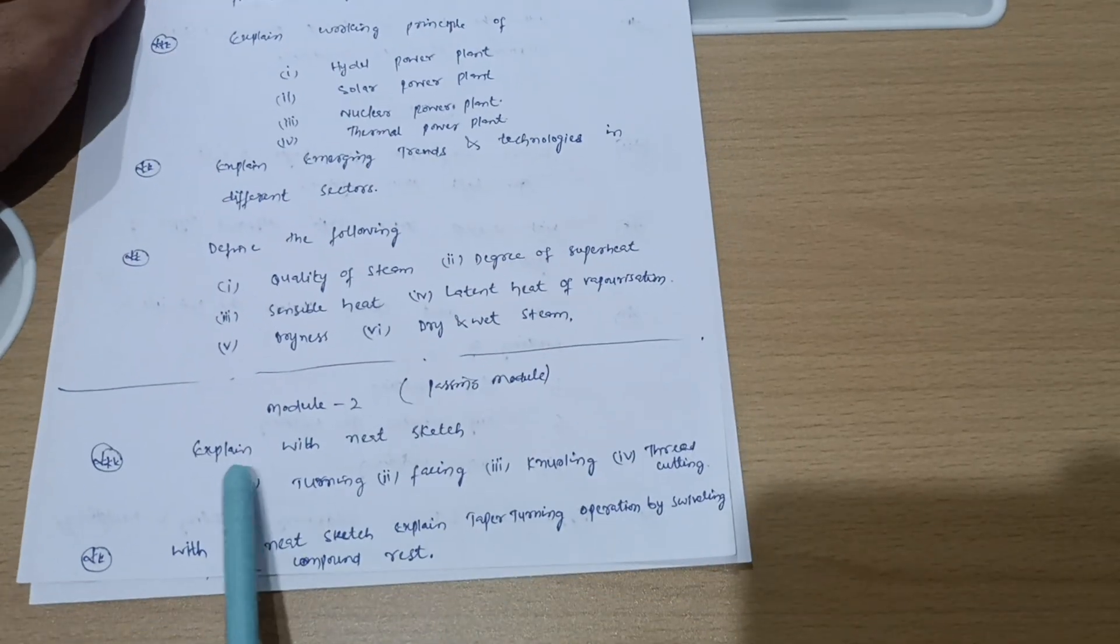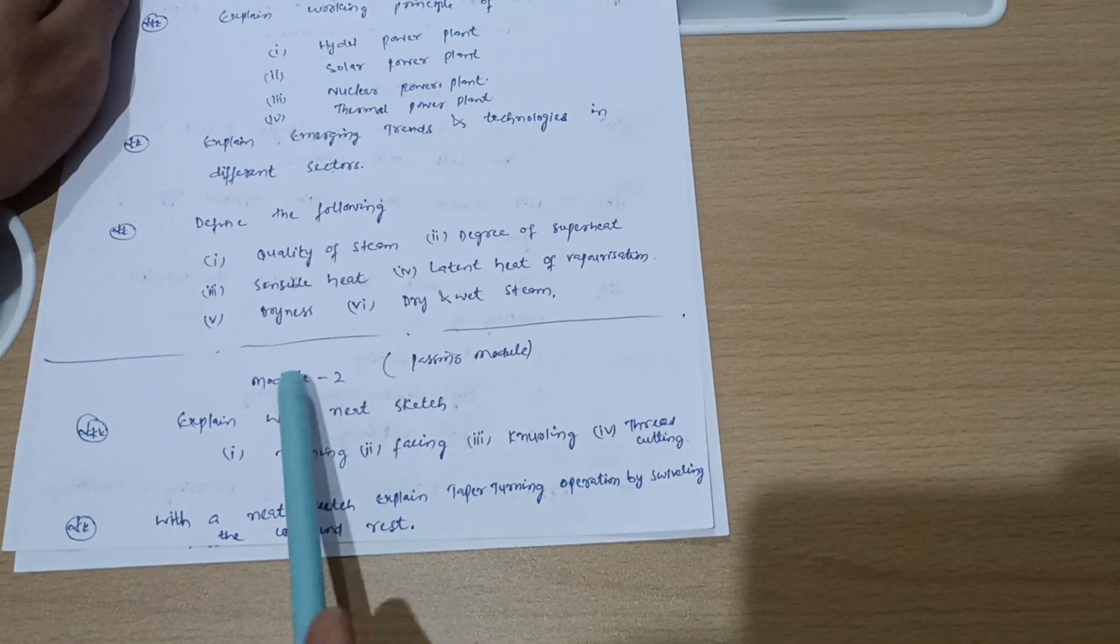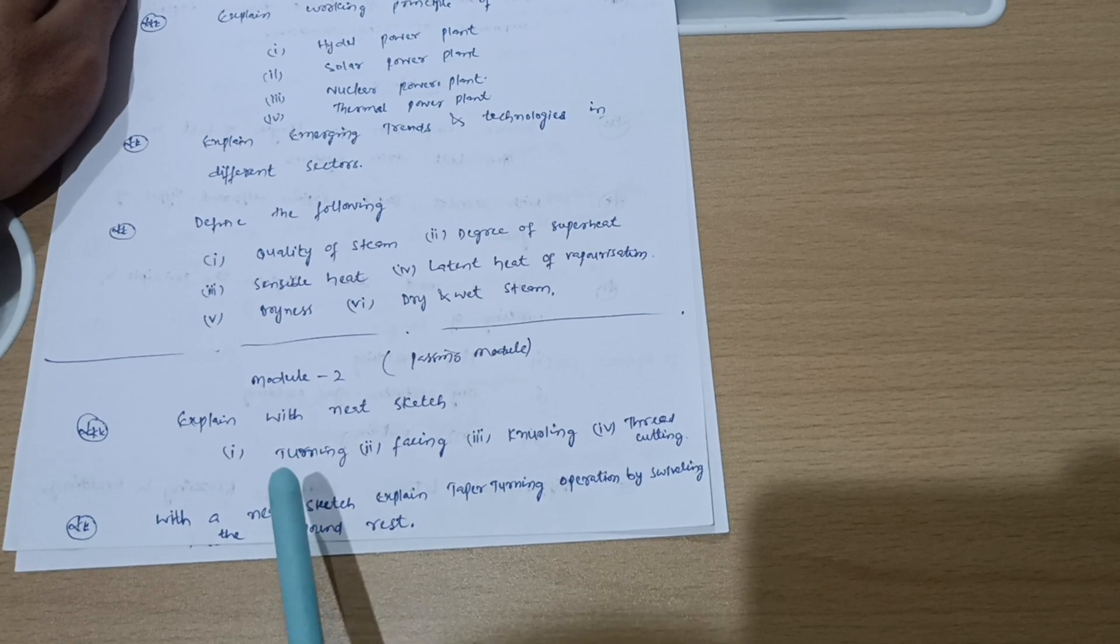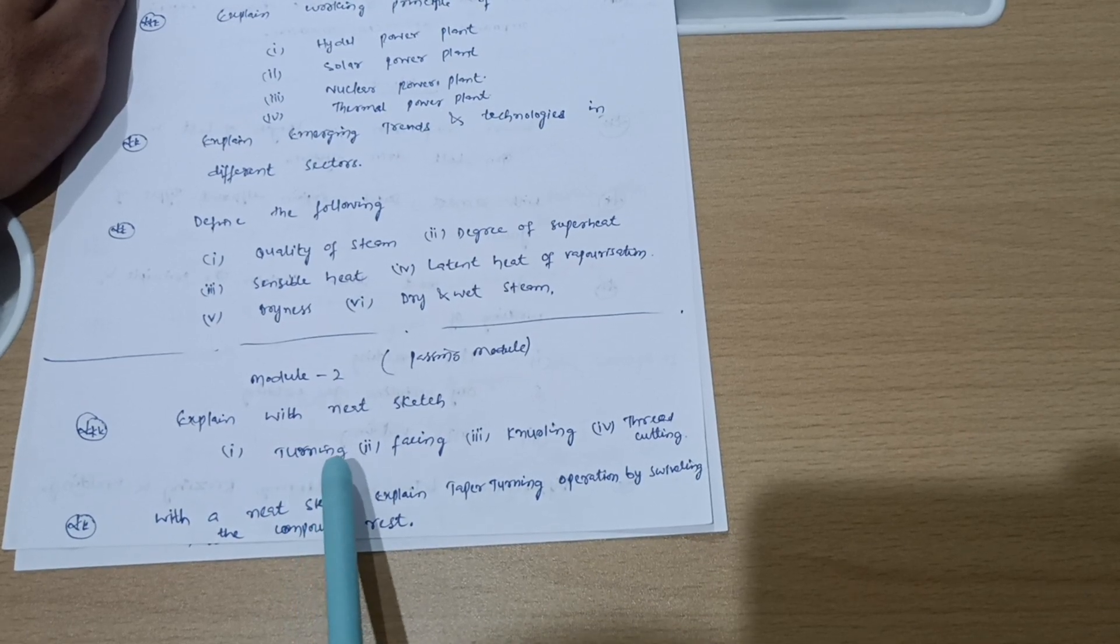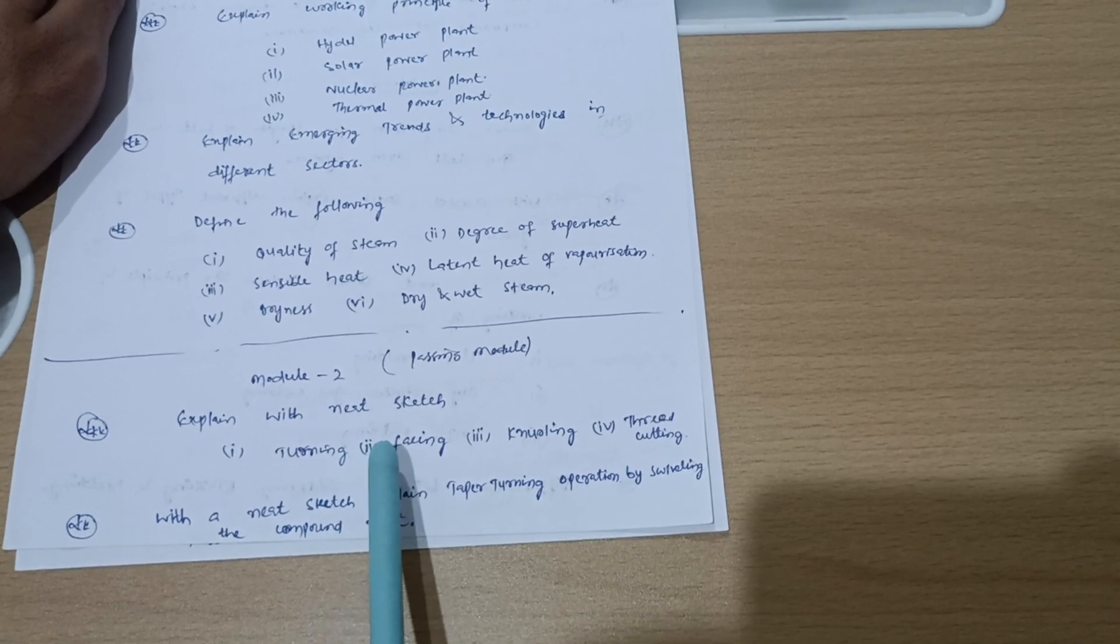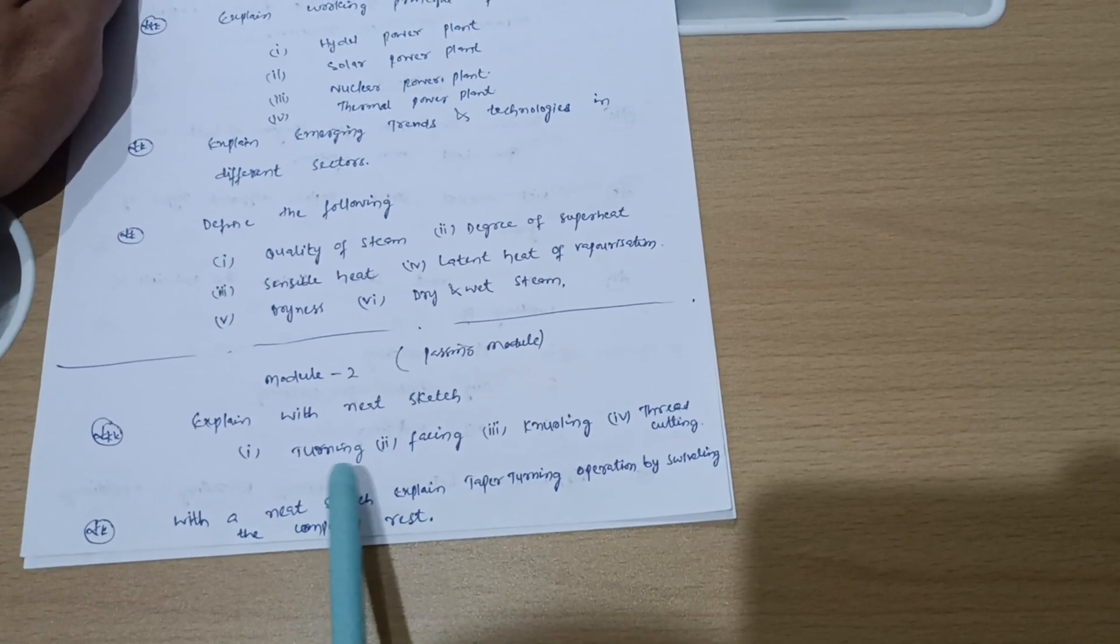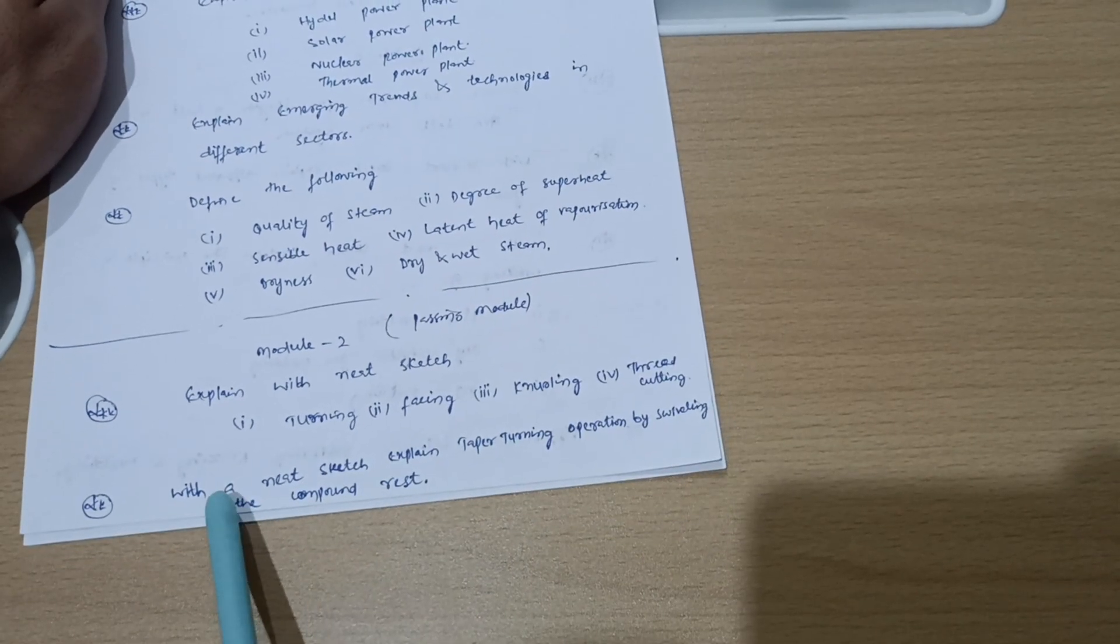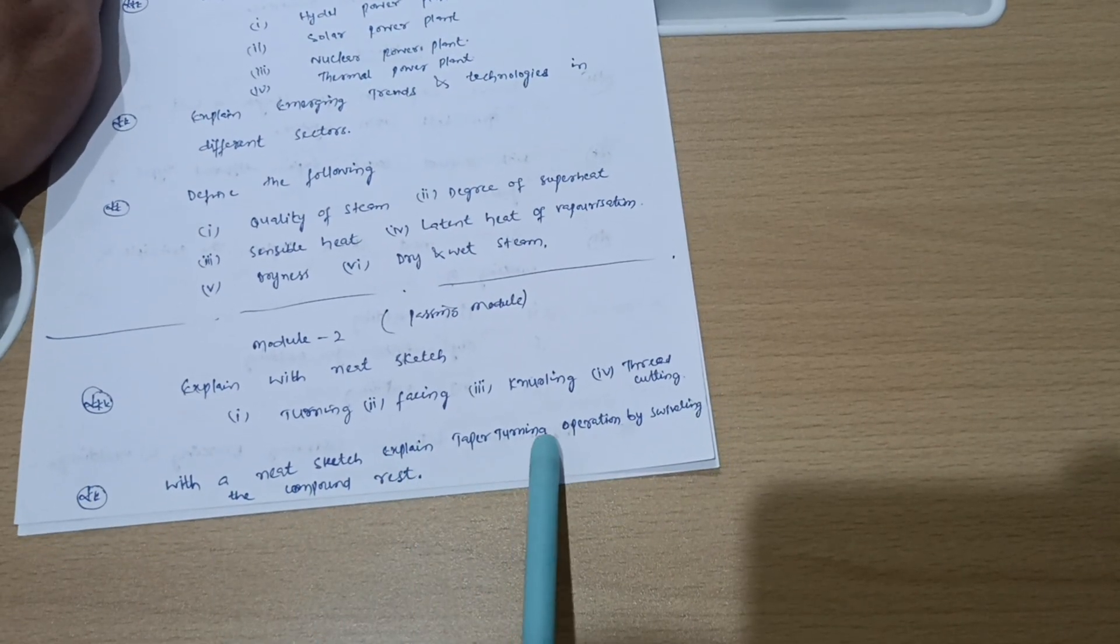Module 2 is also a passing module. Expand with the neat sketch. As I earlier mentioned, it is a diagrammatic subject, so your focus should be totally on diagrams. Try to understand the concepts and in the examination draw the neat sketch and try to explain in your own words whatever you have understood so far. So turning, facing, knurling, and thread cutting.